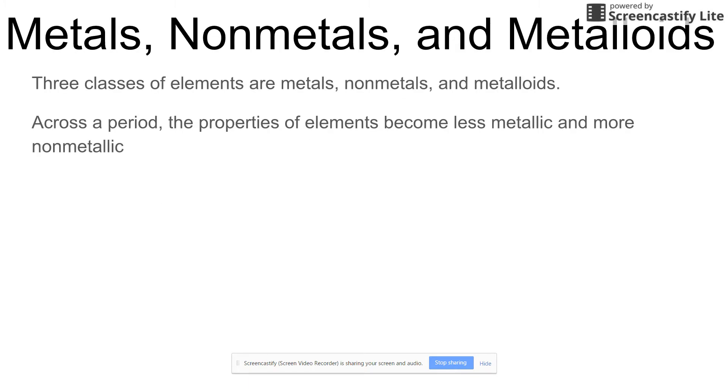Lastly, there's metals, nonmetals, and metalloids. Those are the three major classifications of elements. If you were to move across a periodic table from left to right, you would find that the elements would become less metallic and more nonmetallic. So let's look at the periodic table, this is the last slide.